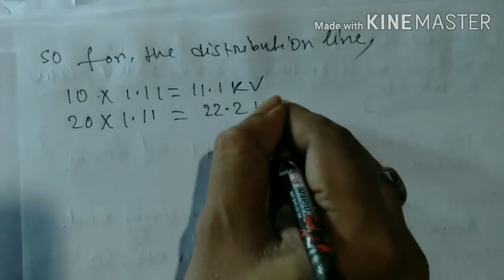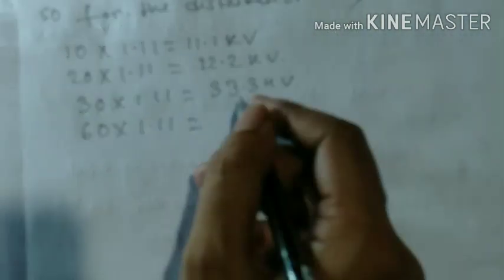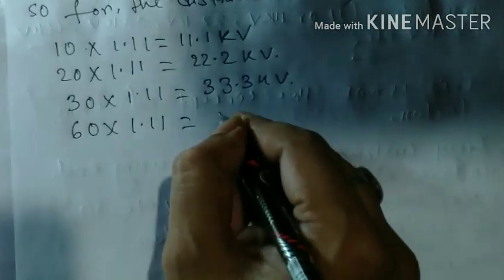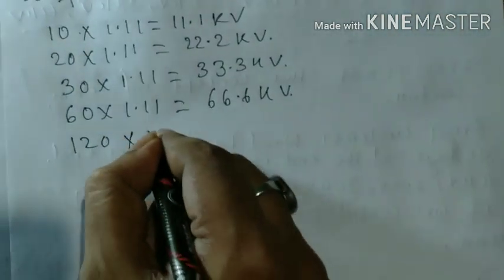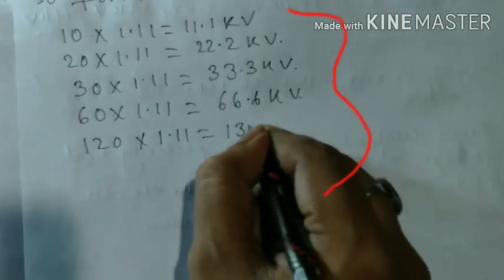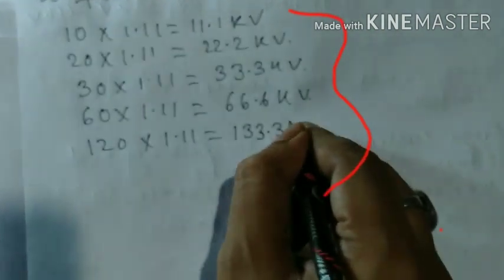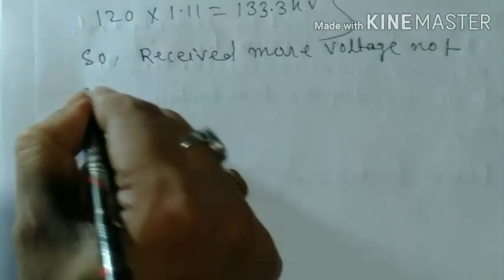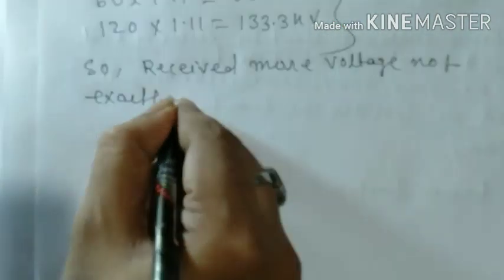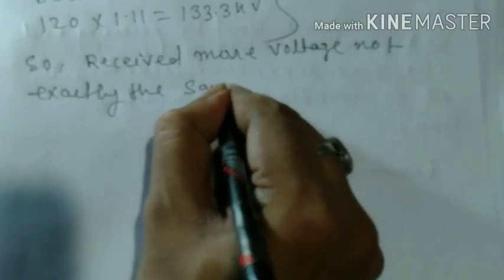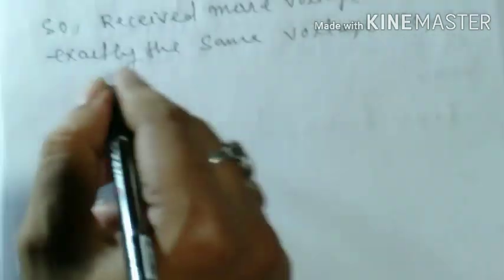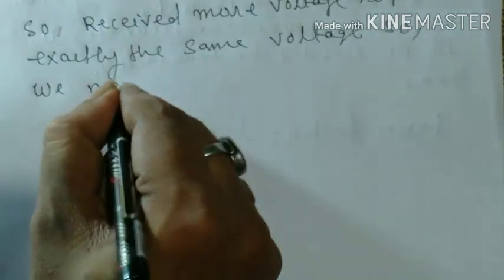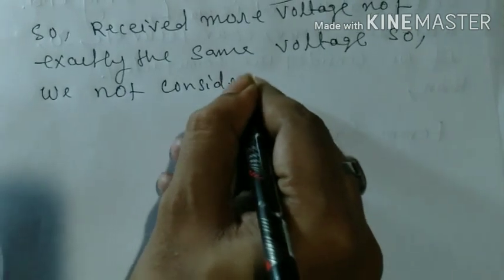And that's 66.6kV and 133.3kV. So here we get extra voltage of 0.1, 0.2, 0.3, and 0.6. But the receiving end voltage we need is exactly 10, 20, and 30.